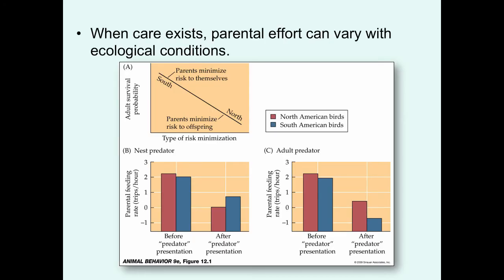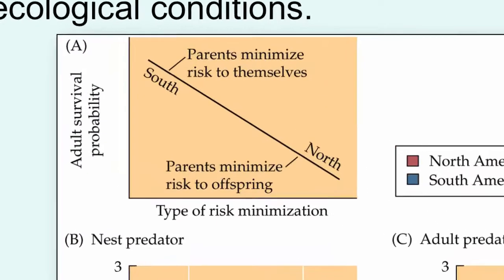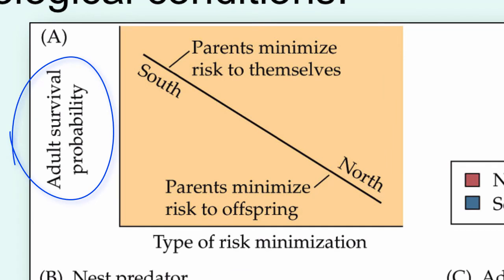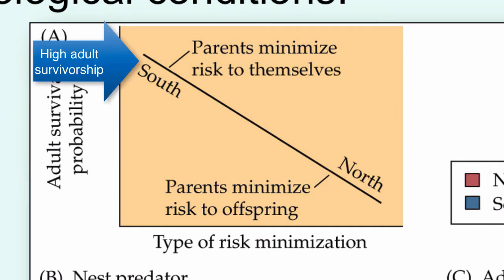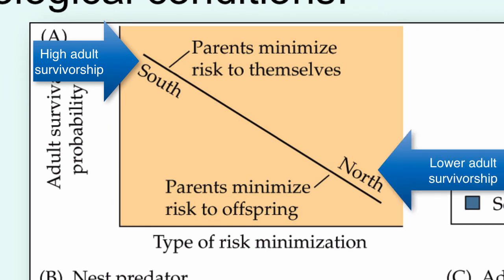When care does exist, the parental effort can vary depending on the ecological conditions. Some research on birds has indicated that there are different strategies associated with parental care in tropical species and those found in temperate northern zones. If you first look at the adult survival probability in these two regions, birds in the tropics tend to have much higher adult survivorship than adults in the northern temperate zone.